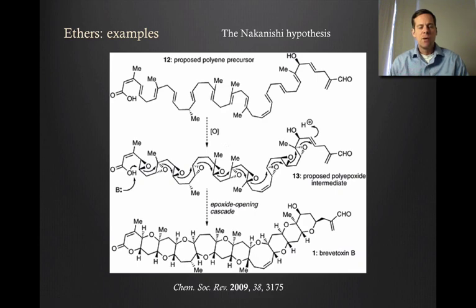What's interesting about the brevitoxins is their proposed biosynthesis. You could consider how does nature make something that complicated? The best guess here is something that's called the Nakanishi hypothesis. Koji Nakanishi is a pioneer in the study of natural products and how they're formed. He's actually an emeritus professor here at Columbia.